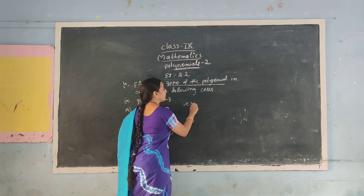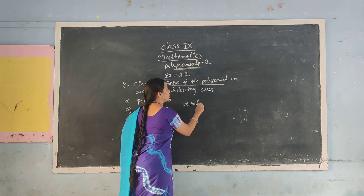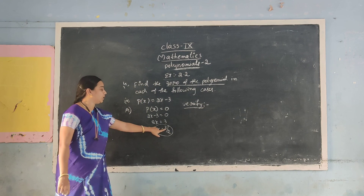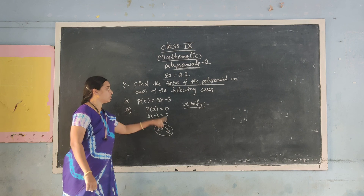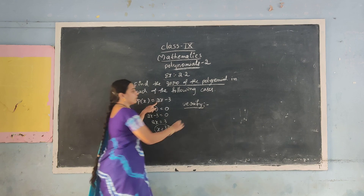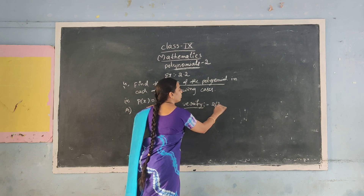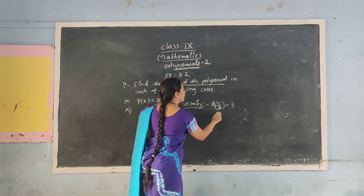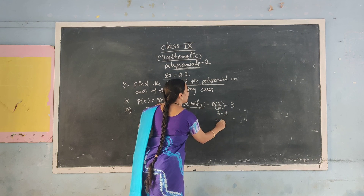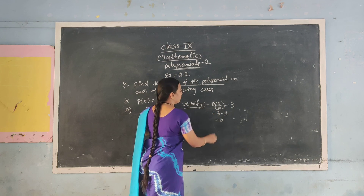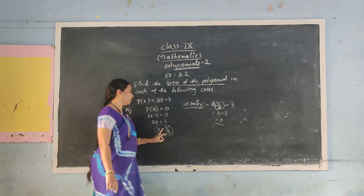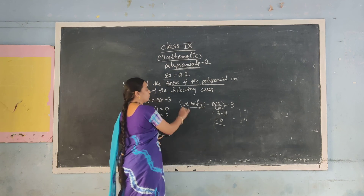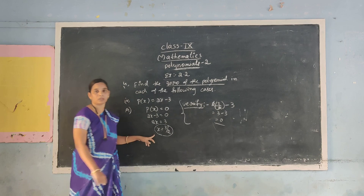Just verify once — verification is not required, but: suppose 3 by 2 is substituted in the place of x: 2 into (3 by 2) minus 3. The 2 cancels, giving 3 minus 3 = 0. You get the answer 0, so 3 by 2 is the correct answer.